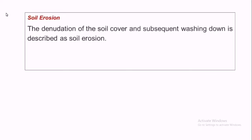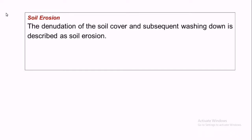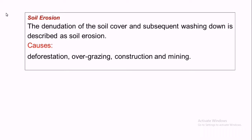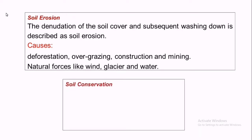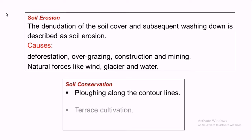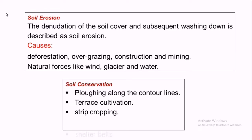What is soil erosion? The denudation of the soil cover and subsequent washing down is described as soil erosion. Causes include deforestation, overgrazing, construction, mining activities, and natural forces like wind, glaciers, and water. Conservation measures include ploughing along the contour line, terrace cultivation, strip cropping, and shelter belts.